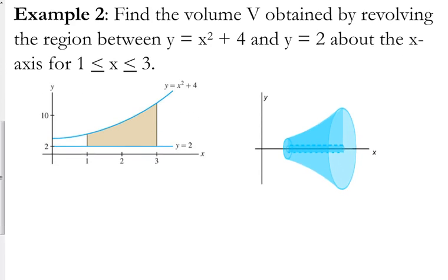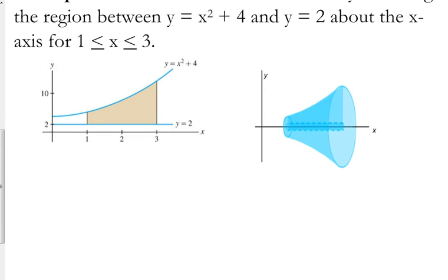Let's look at x squared plus 4 and y equals 2. We're going to rotate it about the x-axis between 1 and 3. So let's set this up. Volume equals pi, the integral from 1 to 3, the outside function or the top function is x squared plus 4 squared minus the bottom function. In this case, it's just 2 squared. Outer radius squared minus inner radius squared.